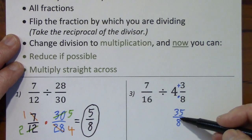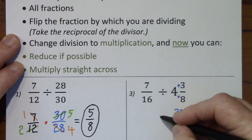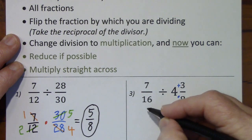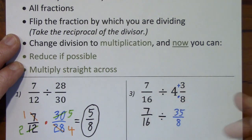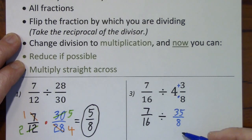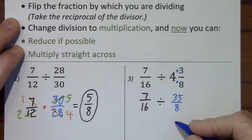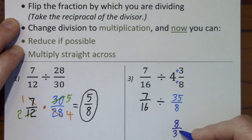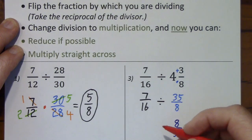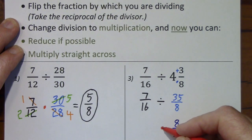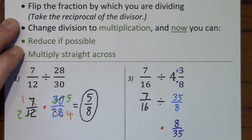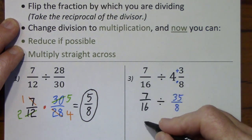But I have not taken the reciprocal, so it's still division. And now I'll take the reciprocal. Change from division to multiplication. And bring down 7 sixteenths.